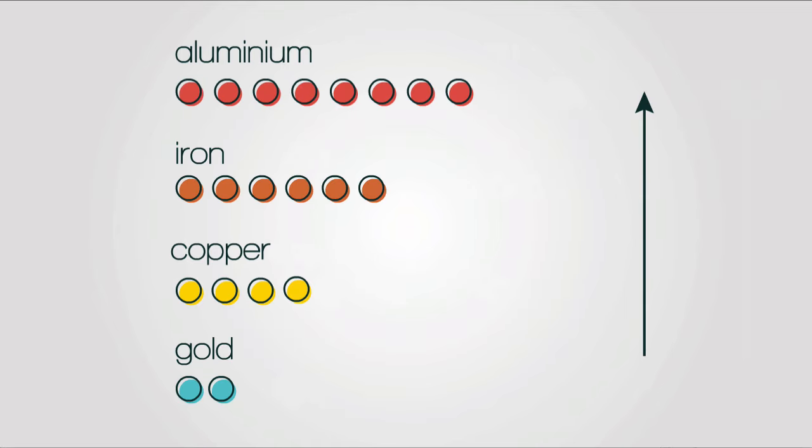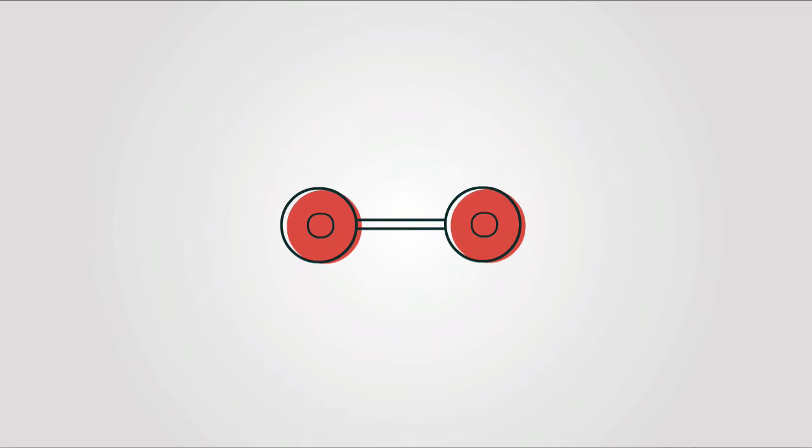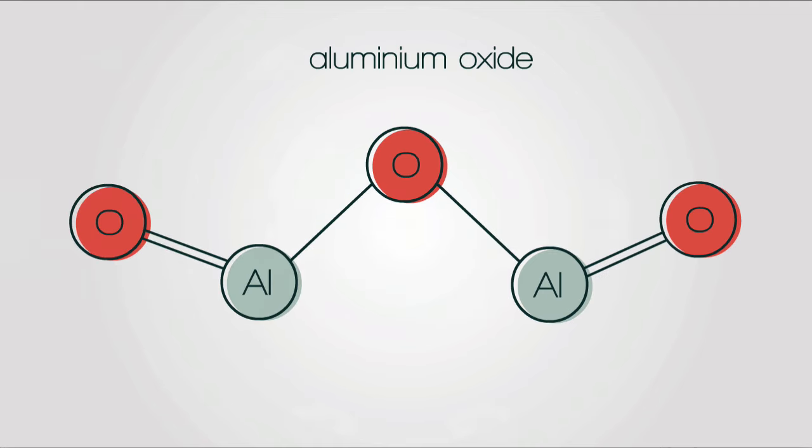The truth is, the aluminium is more reactive than the iron, so it reacts fastest with the oxygen from the air, forming aluminium oxide.